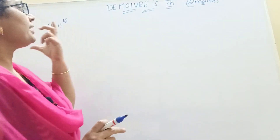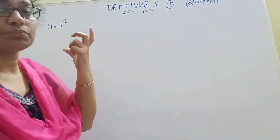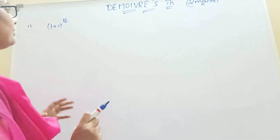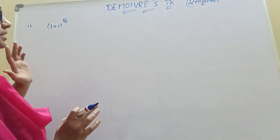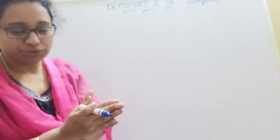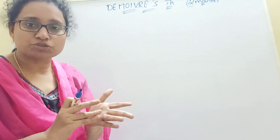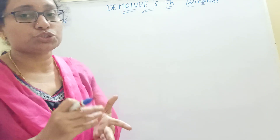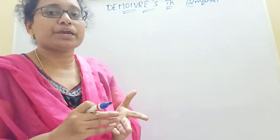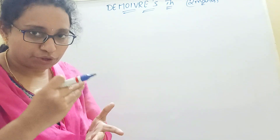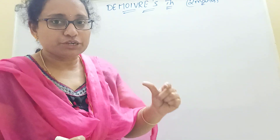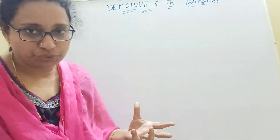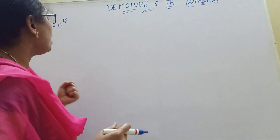Let's come to the point. DeMoivre's theorem 2-marks problems. What are they? First listen — follow our format. Let's do: 1 + omega + omega squared equal to 0, and omega cubed equal to 1. Like that, only formulas — this will be easy.